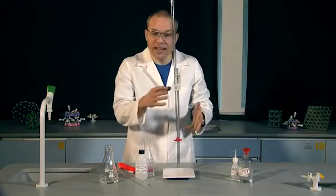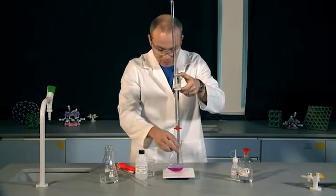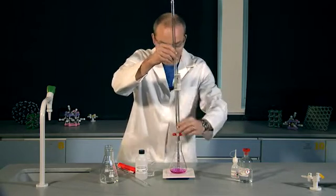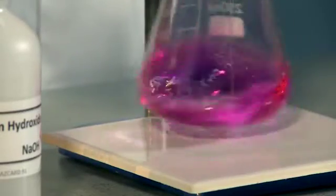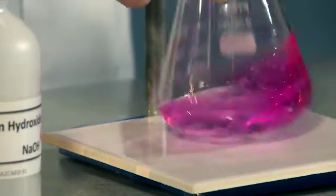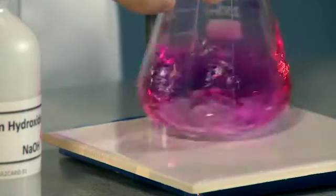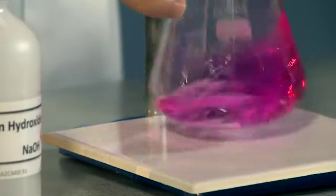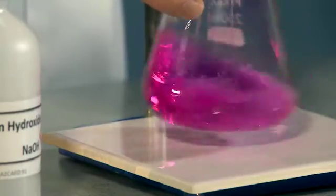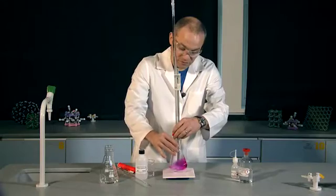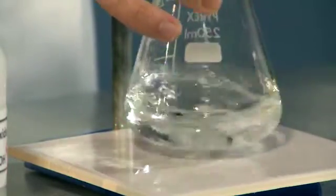All I need to do now is add my acid to my alkali. It's really important to swirl your mixture to ensure that the acid and the alkali react and mix thoroughly. All I'm looking for now is for the colour change, pink to colourless. And as soon as I see it, I need to close the tap. There it is.